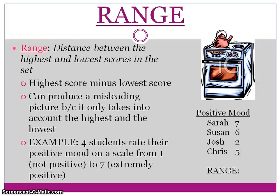Range is the distance between the highest and the lowest number. However, when there are outliers such as the 45 million dollars, we see an extreme number and it really doesn't tell us a lot. Highest score minus the lowest score gives us the range. It can produce a misleading score, but it does give us an overall picture of the data itself.